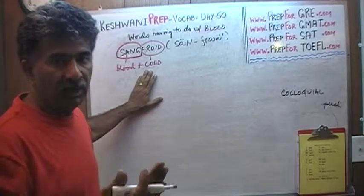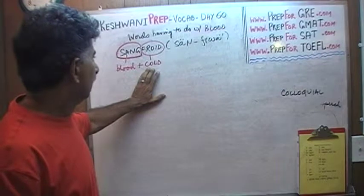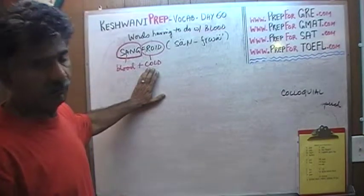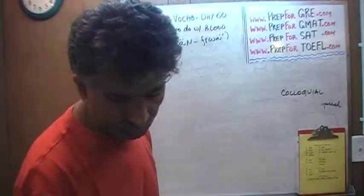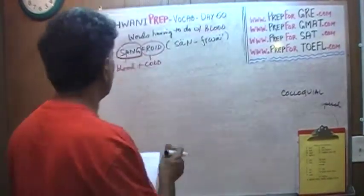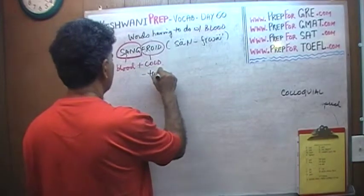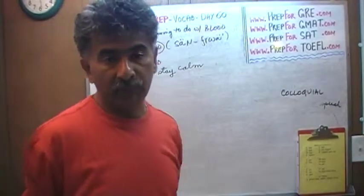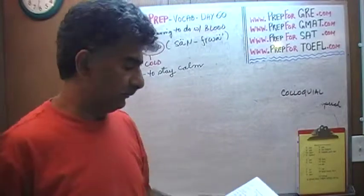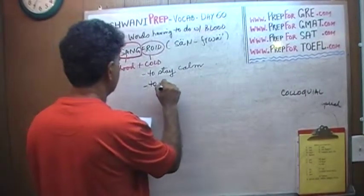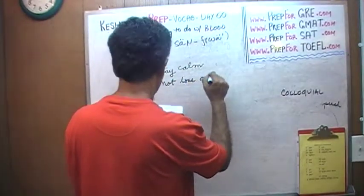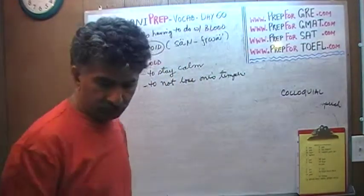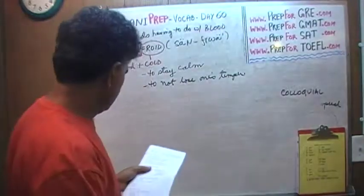In French, to say it's cold or it's hot, they say 'il fait froid, il fait chaud.' That's what this word comes from — 'froid.' 'Sang-froid' means cold blood, but in this context it doesn't mean to be cold-blooded in a cruel sense; it simply means that you are calm, collected. It means to not lose one's temper.